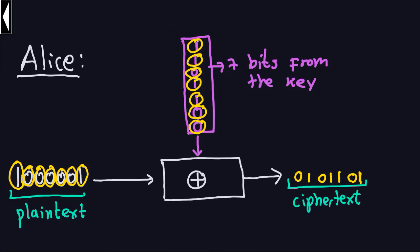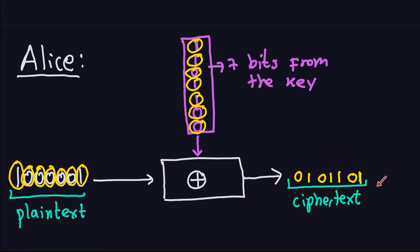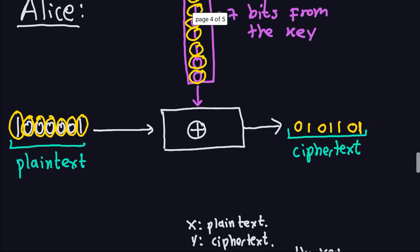Hello and welcome again. In the previous video we talked about how Alice encrypted this plain text here - that represented the capital letter A - and she had these 7 bits coming from the key and put it in the stream cipher, so it XORed, and then this came out here, which was the hyphen if you remember from last time.